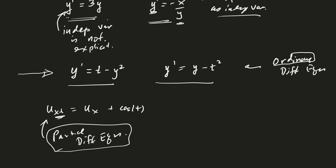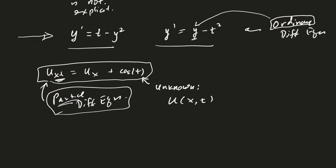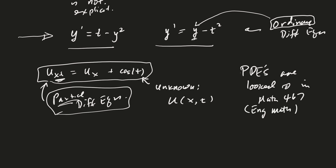When you see the word 'ordinary,' that means your function y of t depends only on one variable. If you see 'partial differential equation,' your function — in this case u — is a function of two variables. The unknown here is u of x and t. We're not going to be studying partial differential equations in this class; PDEs are covered in Math 467, the engineering math course. We'll be sticking with ordinary differential equations.